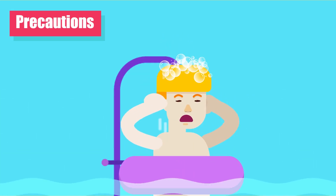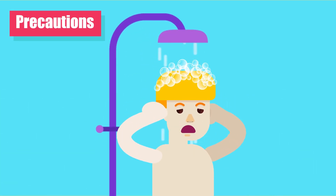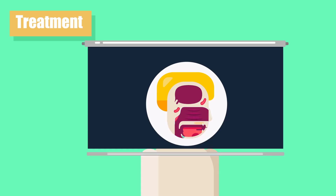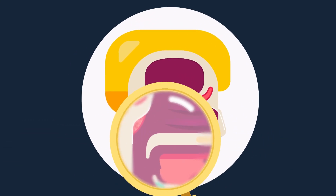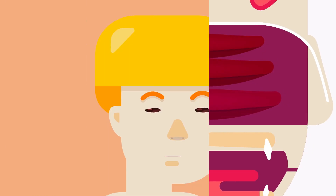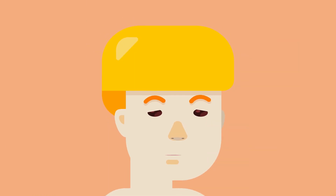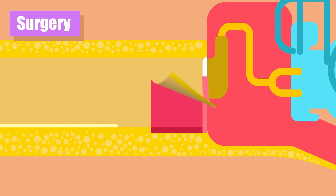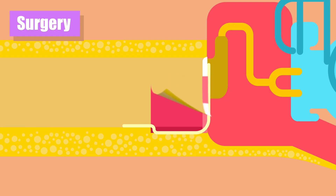Precautions include keeping water out of the ear during swimming and hair wash. (5) Treatment of contributory causes — attention should be paid to treat causes contributing to disease, for example adenoids and nasal allergy. (6) Surgical Treatment — once the ear is dry, myringoplasty can be done to restore hearing.